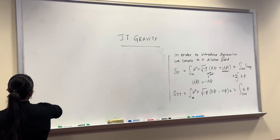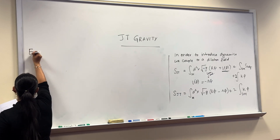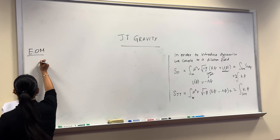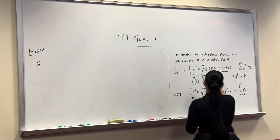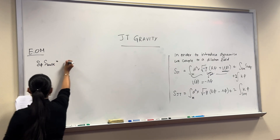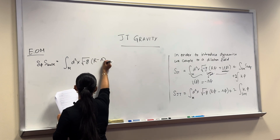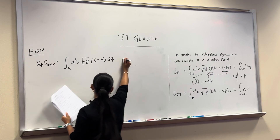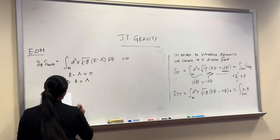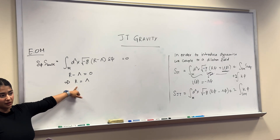Now we will try to derive the equations of motion. First, we vary the bulk action with respect to the dilaton field. Setting the variation to zero, we get that R equals 2Λ, where Λ is the cosmological constant. So if we have a negative cosmological constant, we should get R to be negative as well, which gives us AdS space.